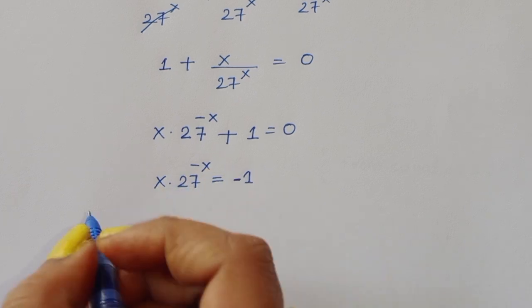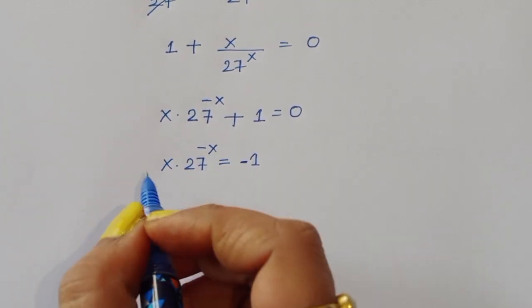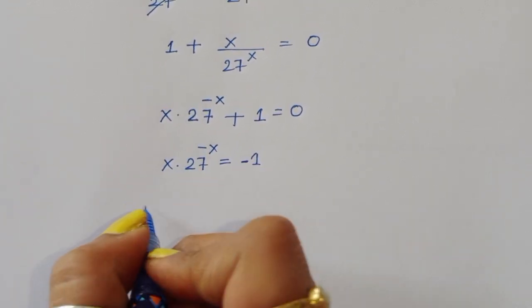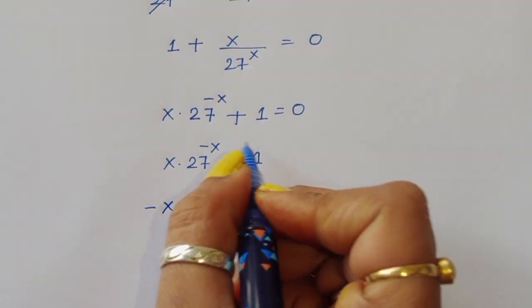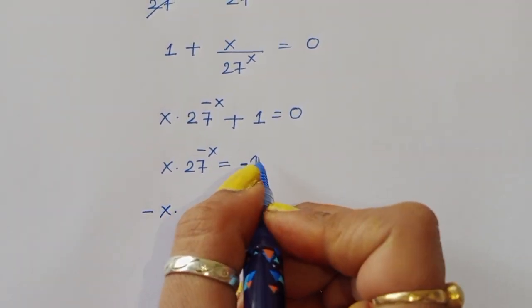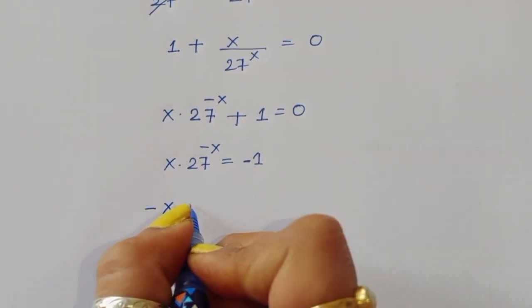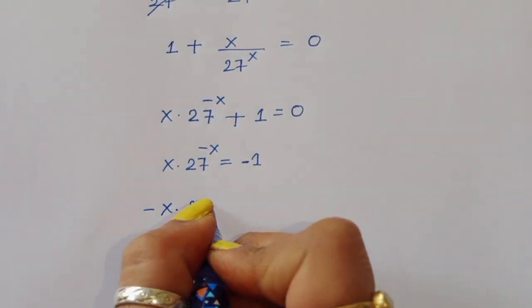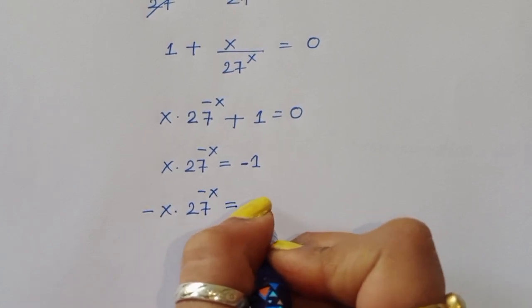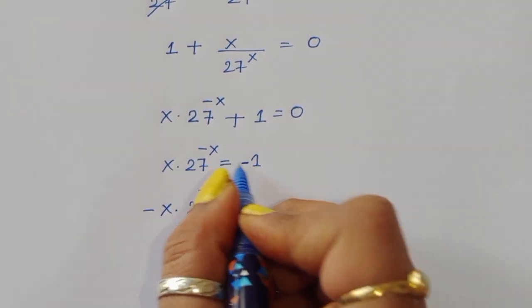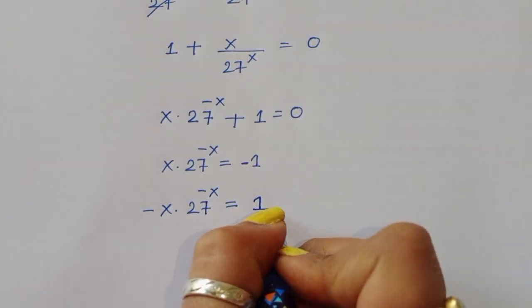Multiplying both sides by minus 1 to keep the expression positive: minus x times 27 power minus x equals 1.